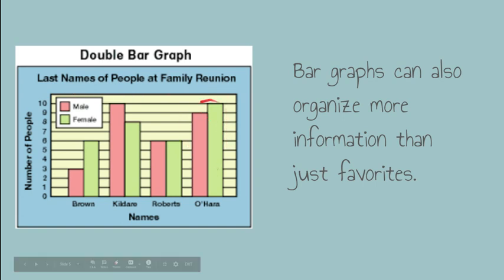I can see there are also double bars here. If I look over at the key, that tells me male and female. So their last name was Brown — there are some men and some women with the last name Brown, Kildare, Roberts, and O'Hara.